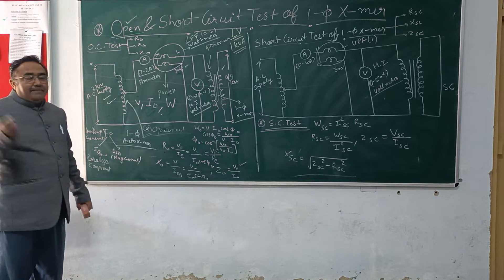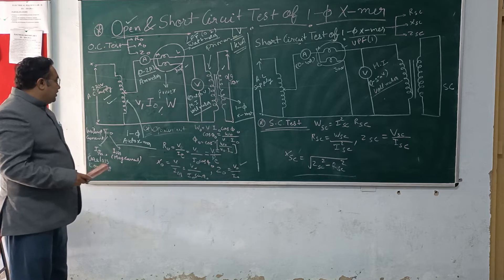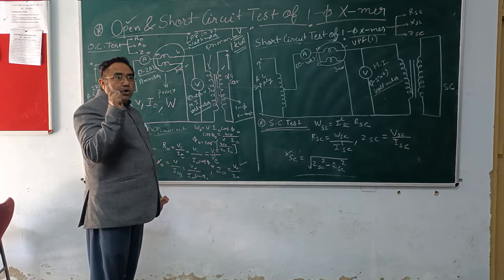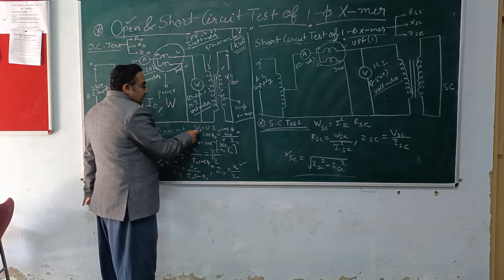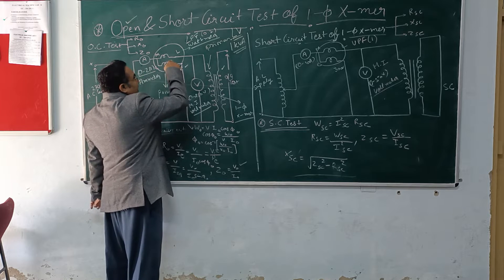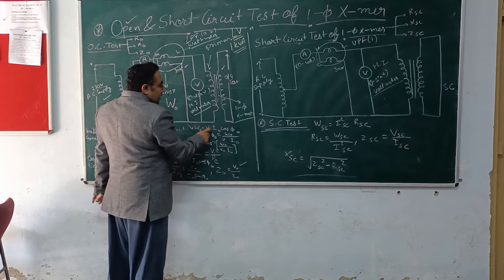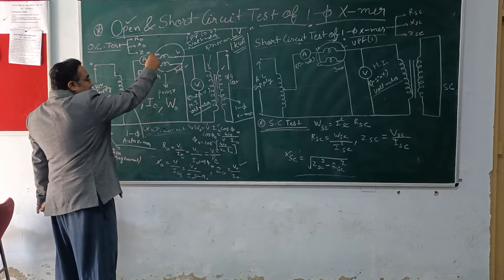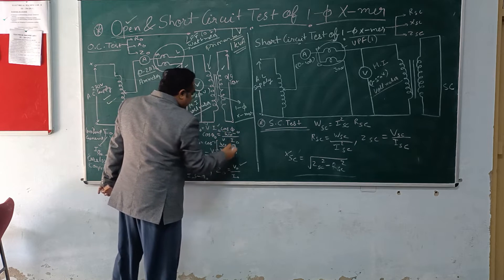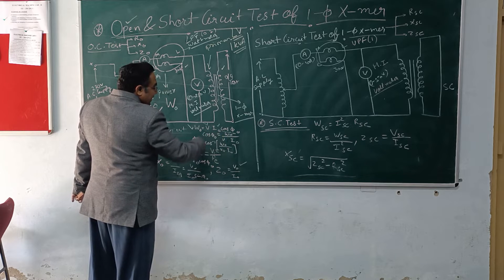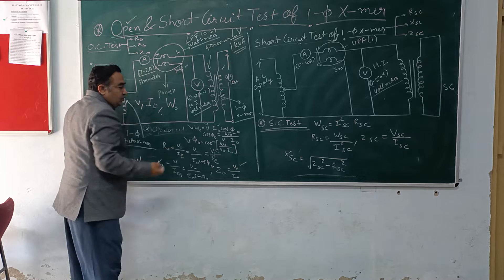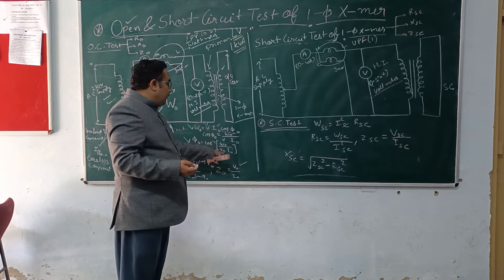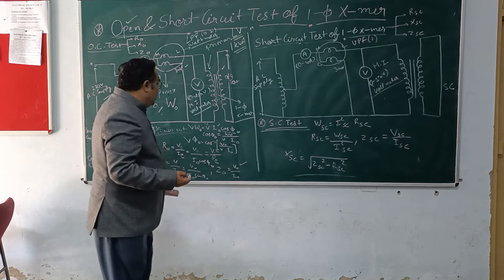Now we will find out the different parameters. The important aspect of this open circuit test is to find out certain parameters. First of all, we will find out the no-load power factor. We know W0 - that is, W0 is the power measured through the wattmeter - and this is equal to V × I0 × cos φ0. So cos φ0 comes out to be cos inverse of W0 upon (V multiplied by I0).